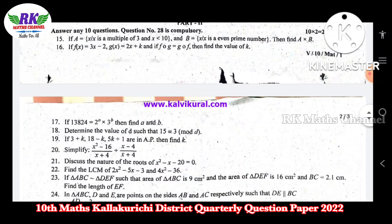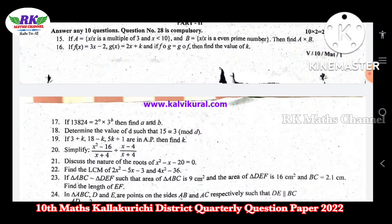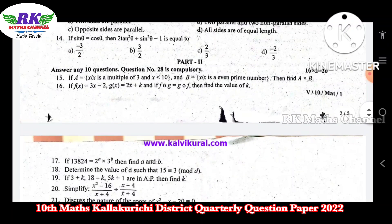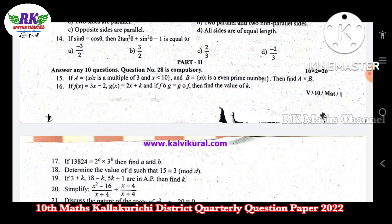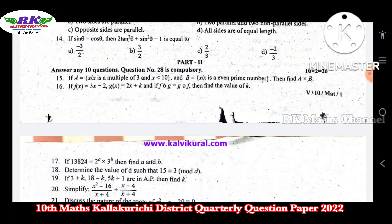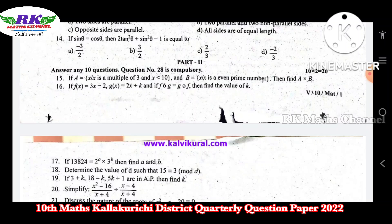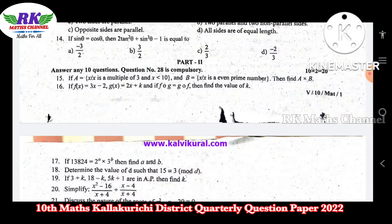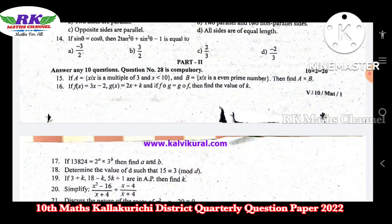Question number 28 is a compulsory question. 10 times 2 marks equals 20 marks. Question number 15 is the A set to B set — A cross B contact. Set the form using A cross B.